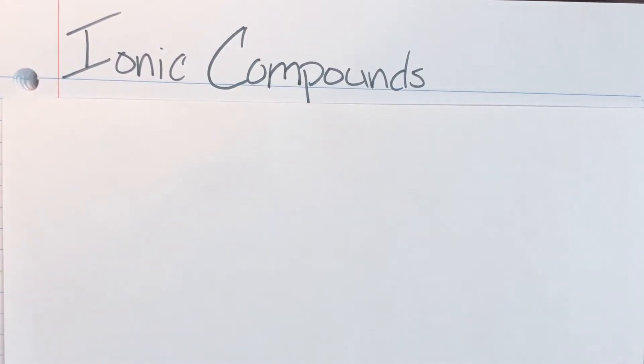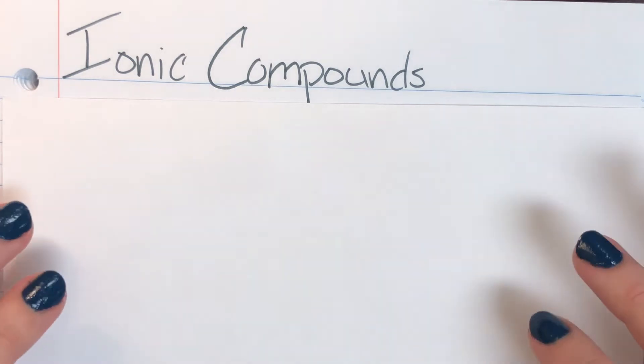Today we're going to go over the very basic concepts of ionic compounds and covalent compounds and just what they're made of and how they compare to each other.